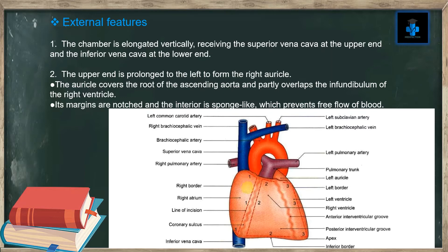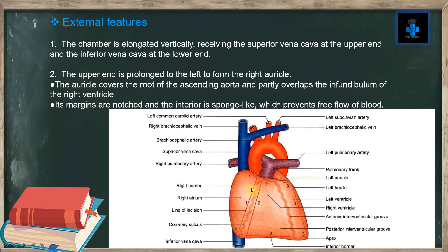To explain the whole diagram: the right brachiocephalic vein is a branch of the superior vena cava; the left common carotid artery, left subclavian artery, and left brachiocephalic vein are also visible. You can appreciate the left pulmonary artery, the left auricle, the right auricle, the left border, the left ventricle, the right ventricle, the apex of the heart, the inferior border, and the right atrium which we are studying.